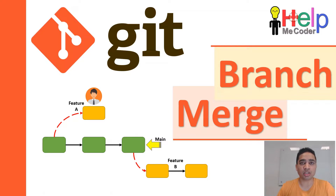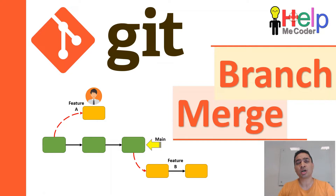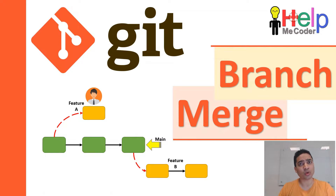Why do we need branching in the first place? In a project there are chances that you need multiple parallel developments — you are either working on a new feature or fixing a particular issue or bug found in production code. In all these cases you definitely will not want to touch or disturb the code currently deployed in production. So what you normally do is branch out from that production code, take a copy of it, work on that branch, and once the fix or feature is developed and tested, you merge it back into the master branch.